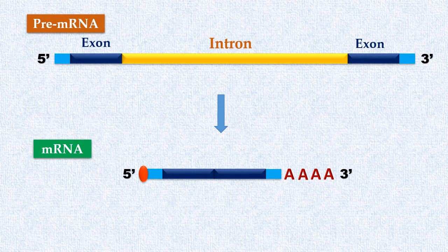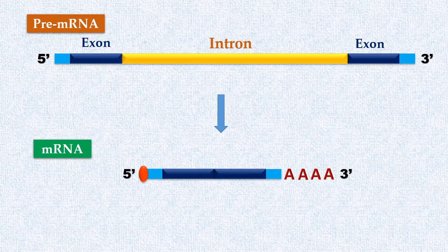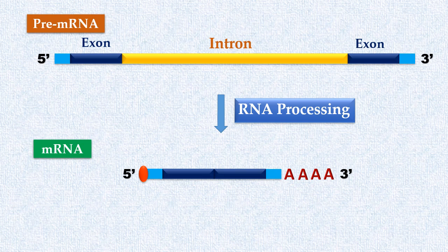Mature mRNA is formed by removal of introns and joining of exons in the correct order. Thus, eukaryotic gene expression requires RNA processing to form mature messenger RNA. This mRNA contains the uninterrupted genetic message. All this processing takes place before mRNA leaves the nucleus.